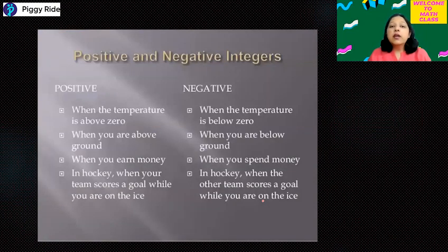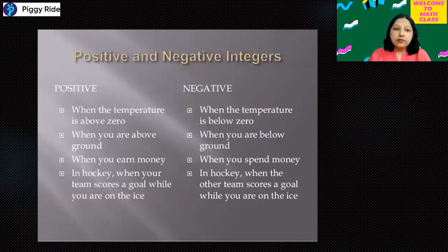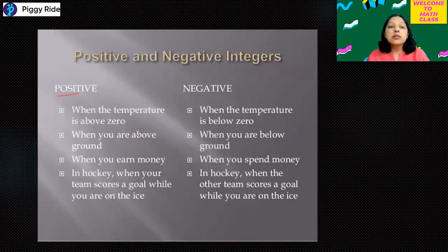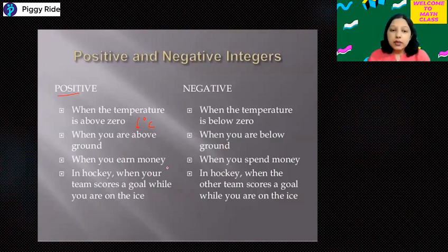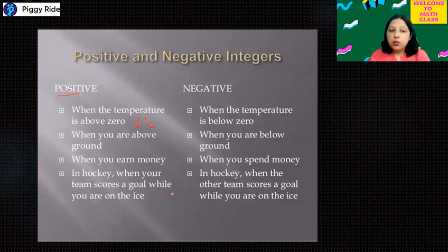Now where do we see positive and negative integers in our daily life? Let's see some positive integer examples. When the temperature is above zero — like we say six degrees Celsius, plus six — we call it a positive integer. When you are above the ground, or when you earn money you get something in plus, that is your positive integer. And when your team scores a goal, that is also a case of a positive integer.